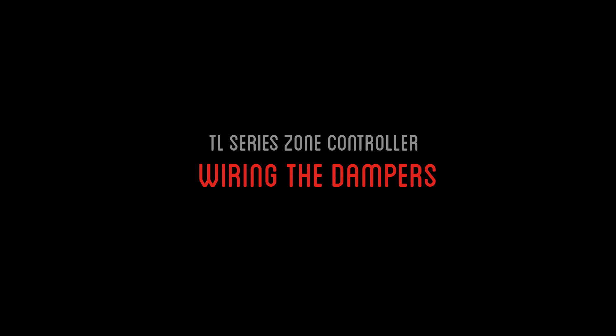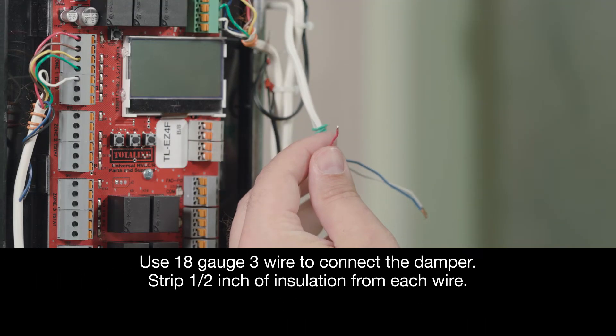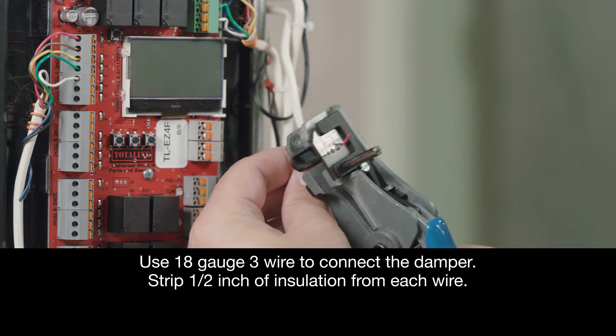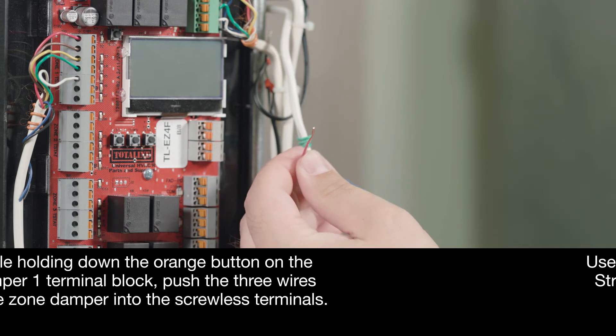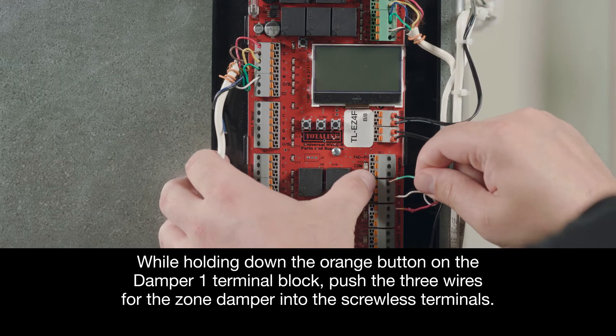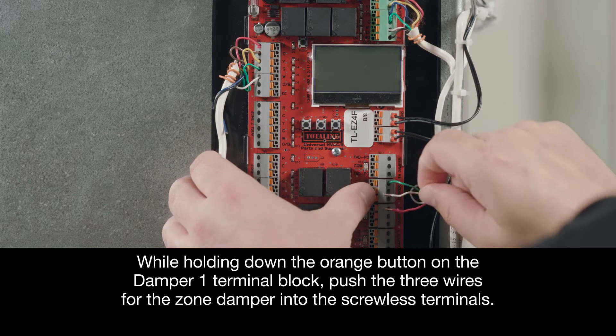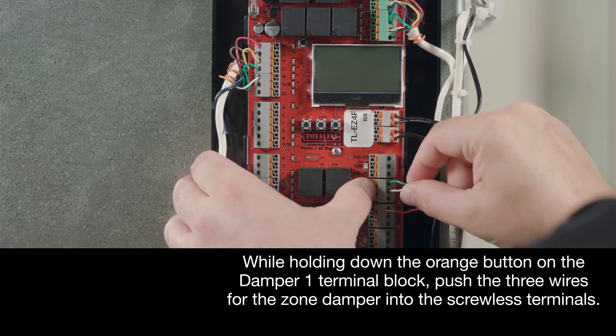Now, let's move on to wiring the power open, power close three-wire dampers. We'll use 18-gauge 3-wire to connect the damper. First, we'll strip a half an inch of insulation from each wire. Then, while holding down the orange button on the Damper 1 terminal block, push the three wires for the zone damper into the screwless terminals.